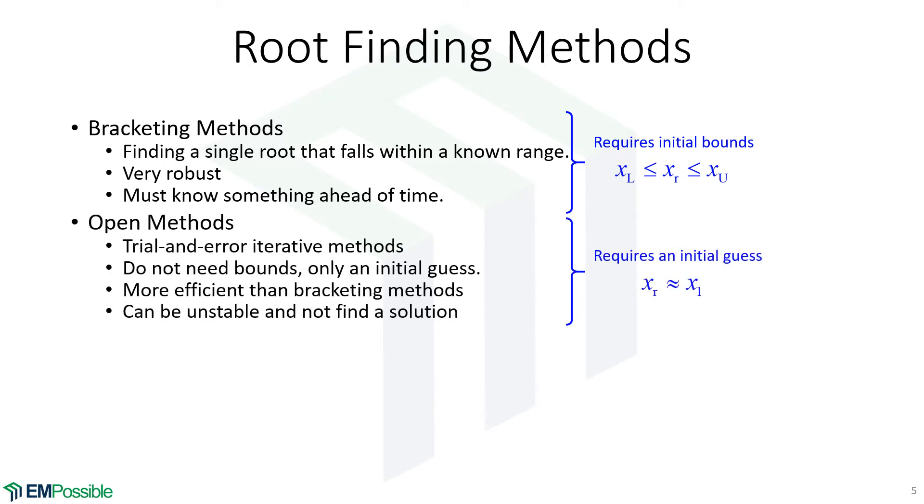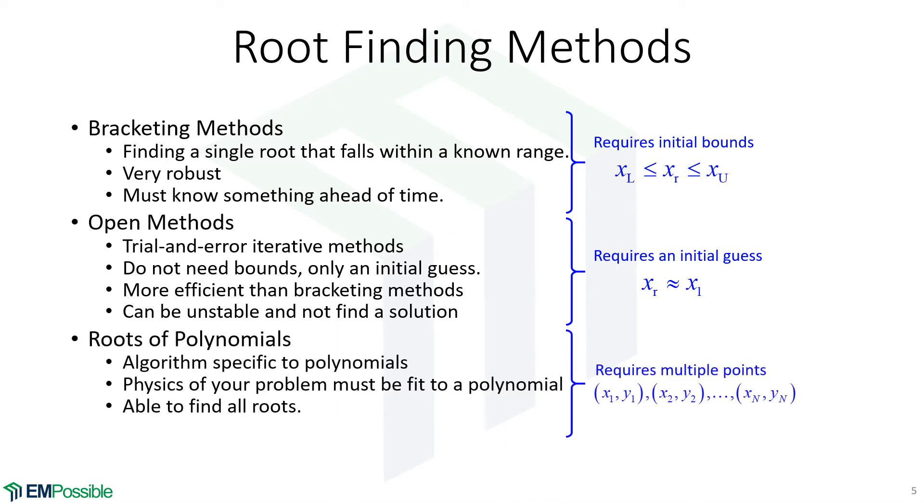The next type is an open method. Here we have one initial guess at the root. So instead of bounds, we have a guess at the root. And typically, we'll look at the slope of the function, guess where the next root is, and keep iterating that until we close it onto the root. The bracketing methods, we keep closing the bounds in onto the root. And then maybe sort of an obvious one or not, roots of polynomials. In fact, we could curve fit a set of known points to any kind of function that has an analytical root. We do a curve fit to that function, and in this case we're talking about polynomials. That's the most common. And once we've calculated the coefficients of the polynomial, we can analytically find the roots. But I do want to generalize this in your minds. It doesn't have to be polynomial. We can use curve fitting as root finding as well.